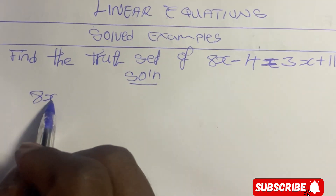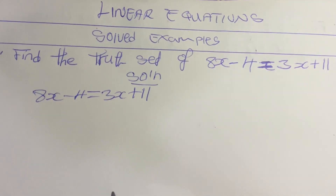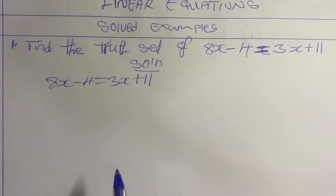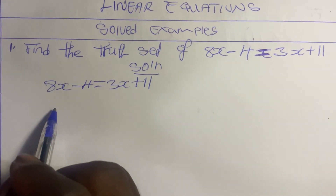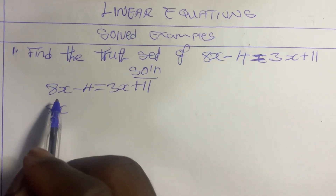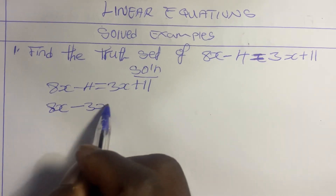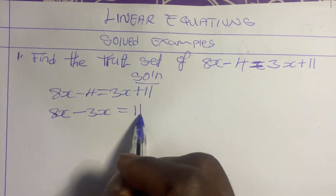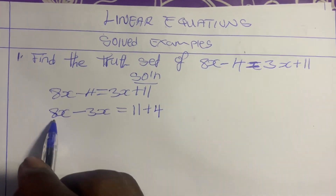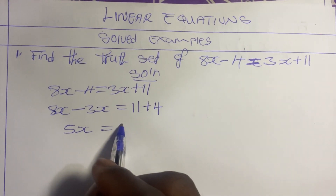Solution: we have 8x minus 4 equal to 3x plus 11. The emphasis here is on the steps you are supposed to take. The steps are very necessary. We group like terms — bring the variables to one side and the constants to the other. We bring the x terms to the left: 8x minus 3x, and bring negative 4 across to become positive 4, giving 5x equal to 15.